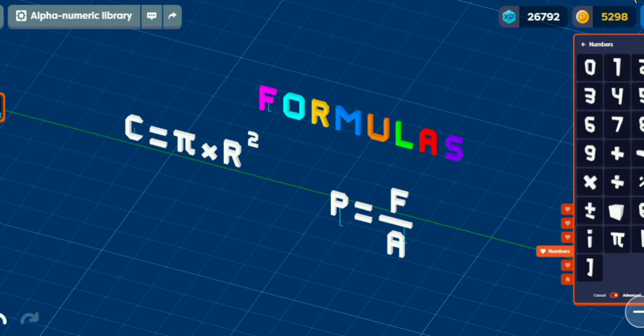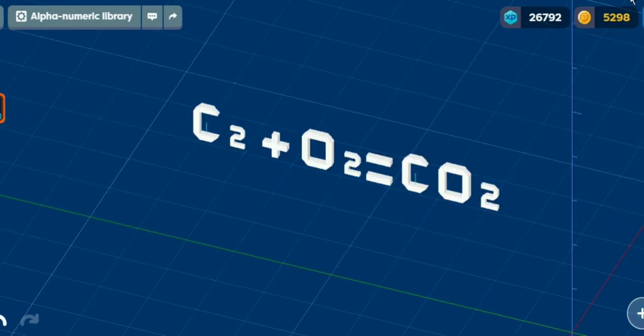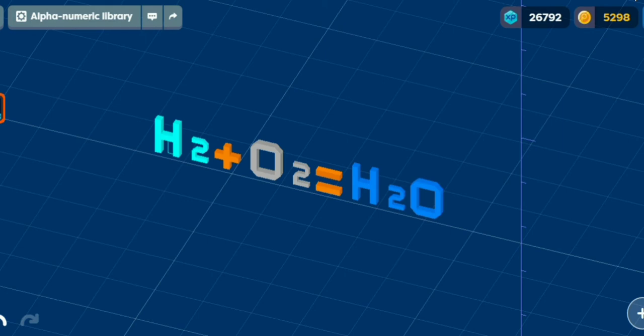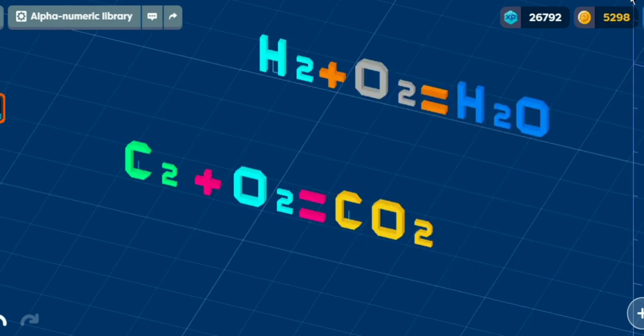You can write not only physics and mathematics, but also chemical formulas using these libraries. For example, here I wrote the formulas of carbon dioxide and water.